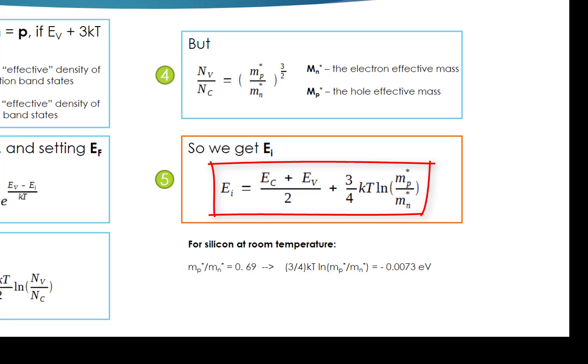So EI lies precisely at mid gap only if Mp asterisk equals Mn asterisk or the temperature T is absolutely zero. For silicon at room temperature, Mp asterisk over Mn asterisk equals 0.69 and (3/4) times KT times ln(Mp asterisk over Mn asterisk) is negative 0.0073 electron volt and EI lies 0.0073 electron volt below mid gap.